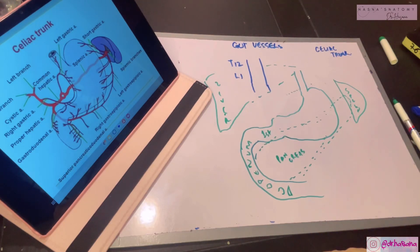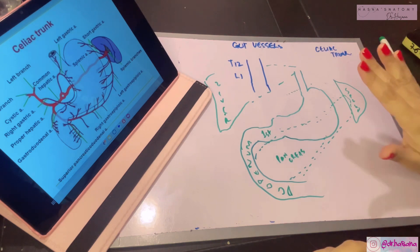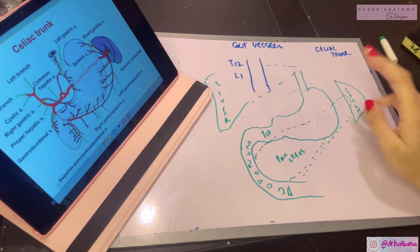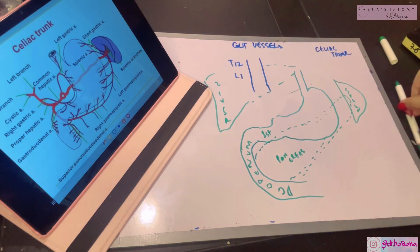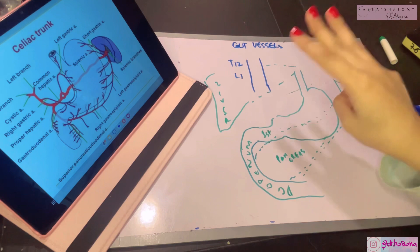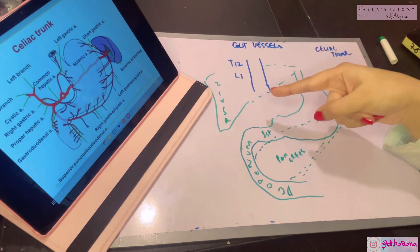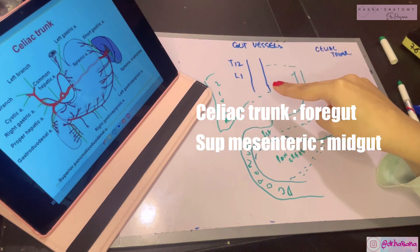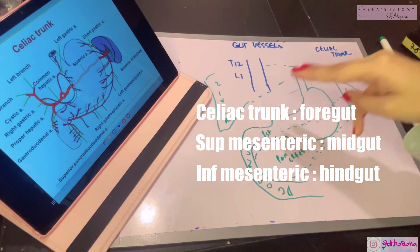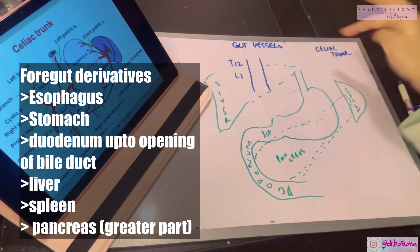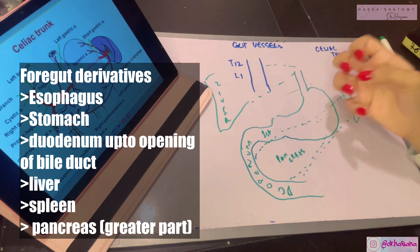Assalamu alaikum, this is Dr. Hasna with Hasna's Anatomy. Today we're going to discuss the large vessels of the gut chapter. Your entire gut has three parts: the foregut, midgut, and hindgut. Each part had its own blood supply from the aorta's three major ventral branches — the celiac trunk for the foregut, the superior mesenteric artery for the midgut, and the inferior mesenteric artery for the hindgut. Today I'll discuss the celiac trunk and how it supplies the foregut structures.